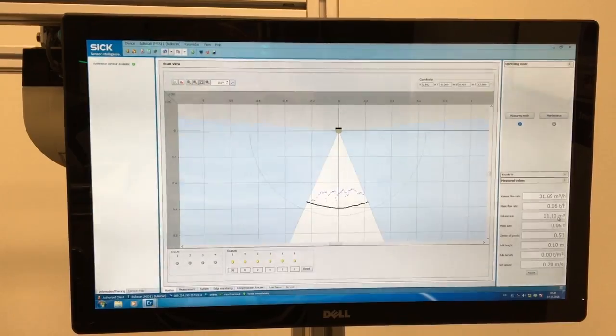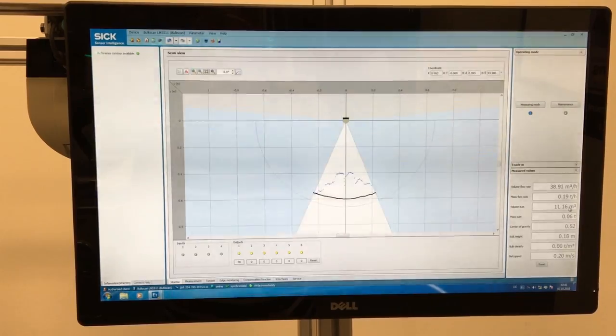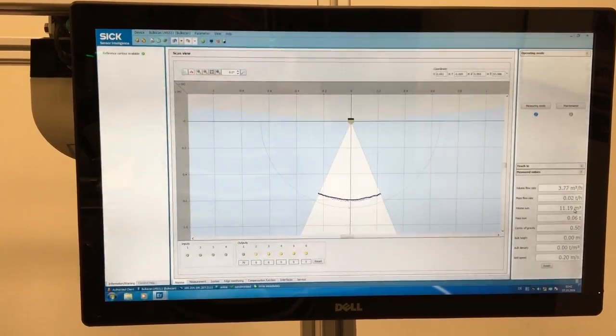I'm going to place the apples back and now I'm going to set the bulk solids into motion. Now you see a live view of the cross sectional reading.